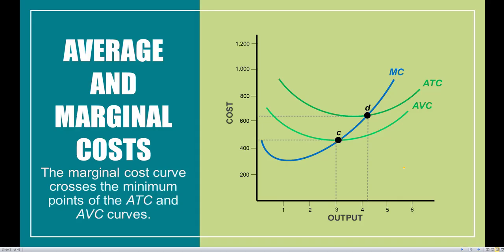When we plot AVC, ATC, and MC together, the first thing to notice is that the ATC curve is always going to be above the AVC curve. That's because ATC is the sum of AVC and AFC. The distance between ATC and AVC at any given quantity equals the average fixed cost. As we increase output, this difference gets smaller and smaller because AFC is declining. The AVC will get very, very close to the ATC but will never intersect it.